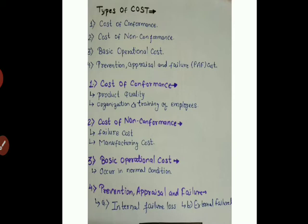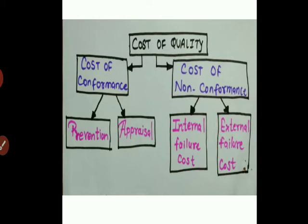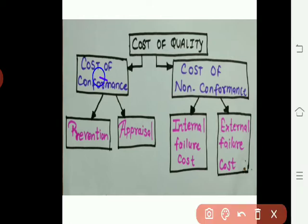Prevention, appraisal, and failure costs are all divided into internal and external parts. Appraisal and prevention costs come under cost of conformance. To summarize the chart: cost of quality is divided into cost of conformance and cost of non-conformance. Cost of conformance is further divided into prevention and appraisal cost. Cost of non-conformance is divided into internal failure cost and external failure cost.